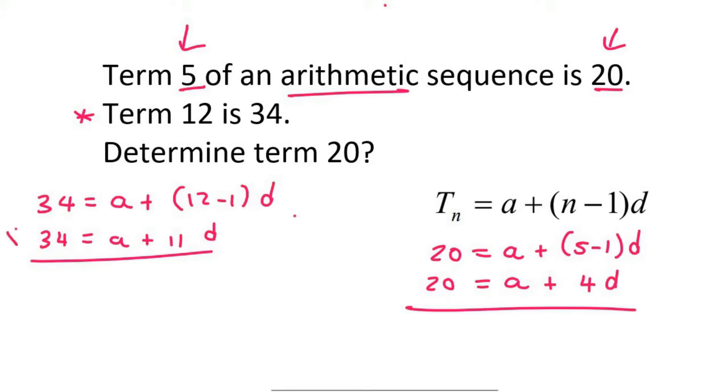So what I'm going to do is I'm going to take this equation and get a by itself. If you do that, you would get 34 minus 11d.